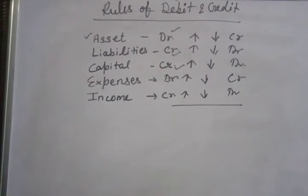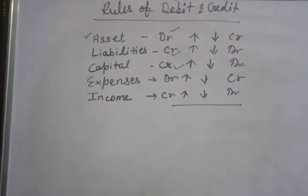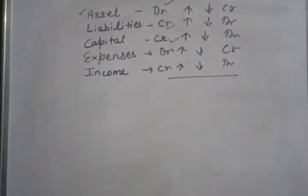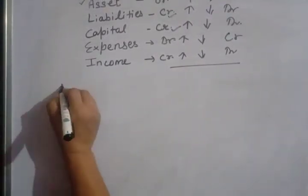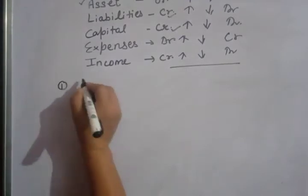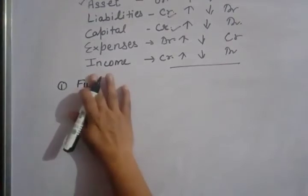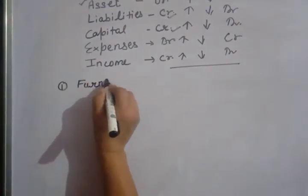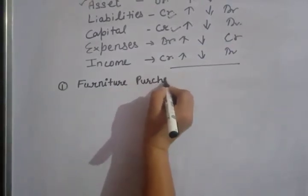This is your basic concept which you must always remember. If you have this concept clear, then there is no problem in general entries. Now we have to practice these things. Practice now — you can do it with me. I will write a transaction. For the first transaction: Furniture purchased for cash.